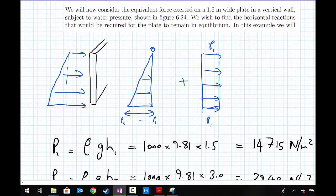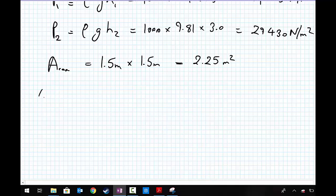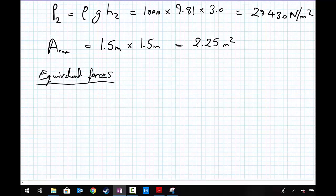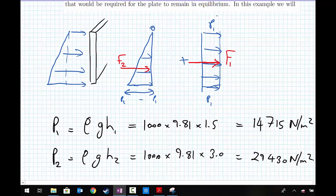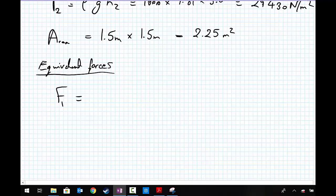Going back to this diagram, we're going to define two equivalent forces. For the rectangular section, which we know acts at halfway down, we'll call this equivalent force F1. The equivalent force from the triangle system we'll call F2. F1 is equal to the average pressure, which in this case is constant at P1, multiplied by the area 2.25 meters squared. That gets us 33.11 kilonewtons.